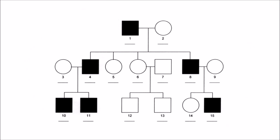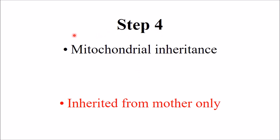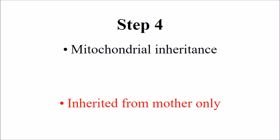Step number four is to look for mitochondrial inheritance. The golden rule is that it is inherited from the mother only. In this pedigree, the mother transmits the trait to all her daughters and sons. In the next generation, the mother again transmits to all daughters and sons, but the affected father does not transmit the trait to his daughters or sons.